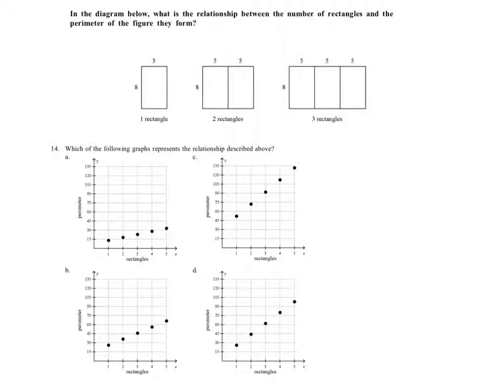So I haven't done this yet, but I'm going to redraw for you what the table said on that last problem, and what it looked like was roughly this, where we have the number of rectangles. Sorry, I'm not in my writing tool. The number of rectangles and the total perimeter, P.